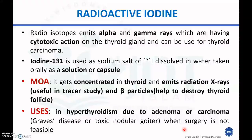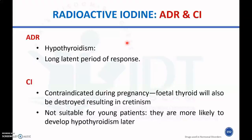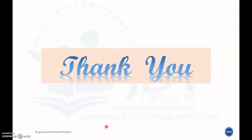The important adverse reaction of radioactive iodine is hypothyroidism due to destruction of the thyroid gland, along with a long latent period for hormone concentration to recover. It is contraindicated in pregnancy, as fetal thyroid will also be destroyed resulting in cretinism, and it is not suitable for young patients as they are likely to develop hypothyroidism later. That concludes the pharmacology of thyroid hormone and its inhibitors used in hyperthyroidism.